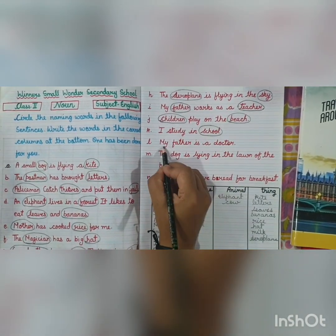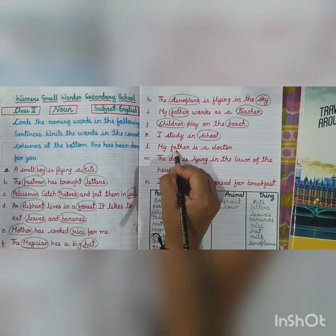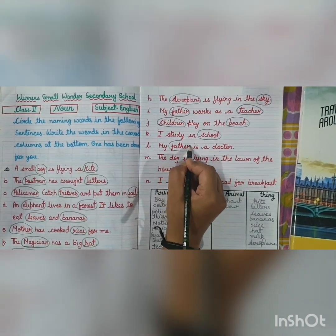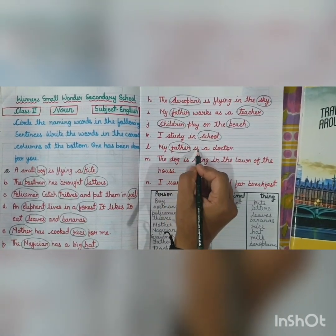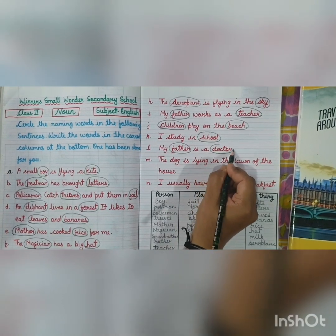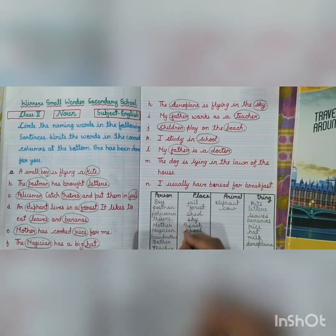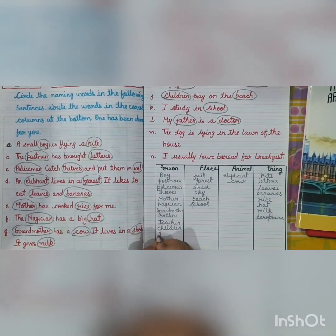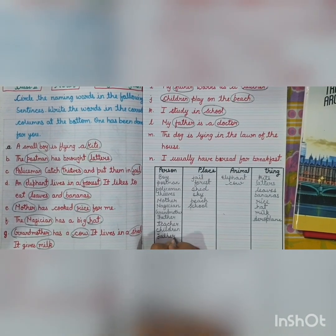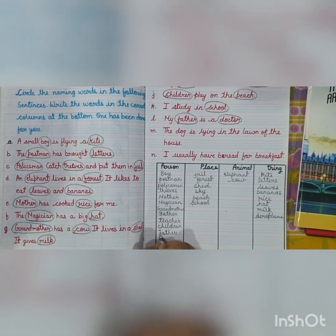My father is a doctor. Father is a person, and doctor is also a person. We write father and doctor in the persons column.